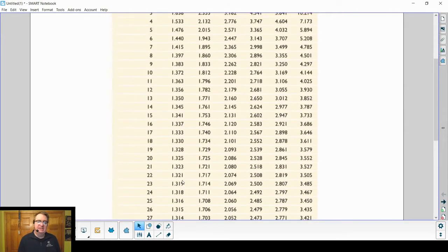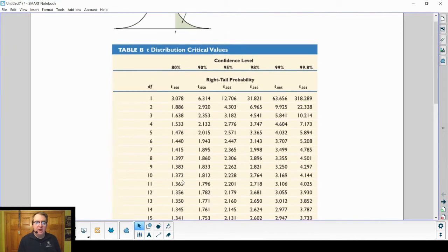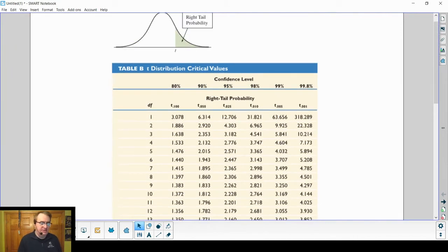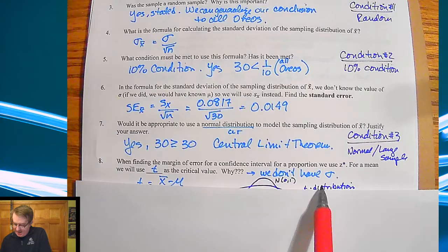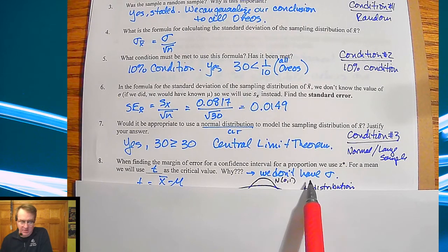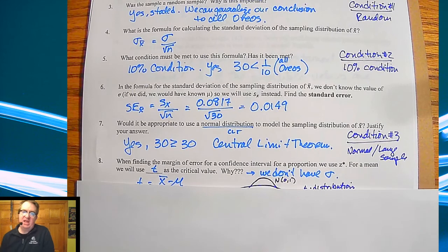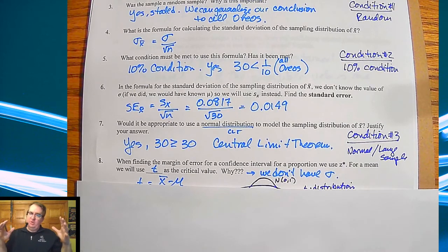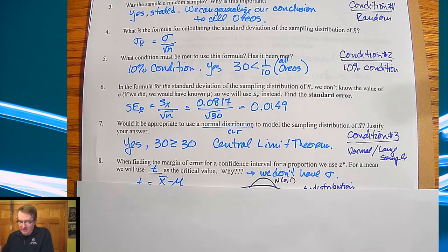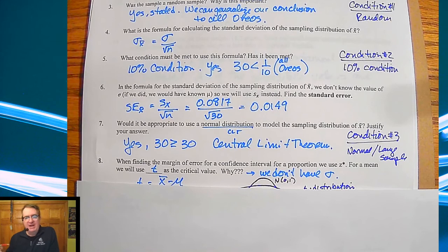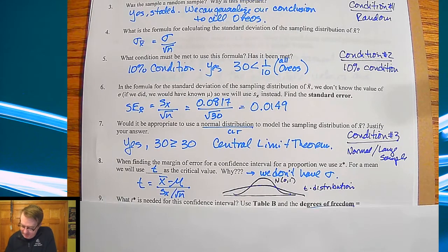So what t score does is it scales it for our sample size. And the reason why we need to do that is because we don't have our standard deviation. Since we don't have our standard deviation we have to make a bigger allowance for what's going on because the s sub x that we came up with in our sample may or may not be super accurate compared to what the population standard deviation is.